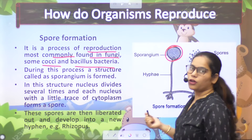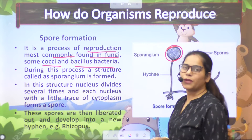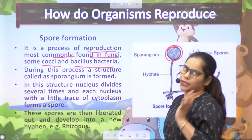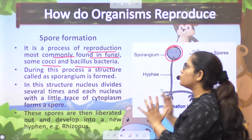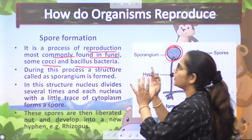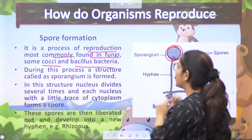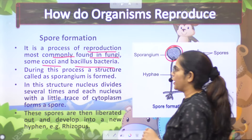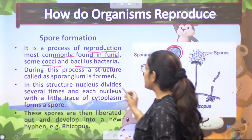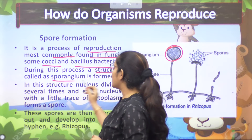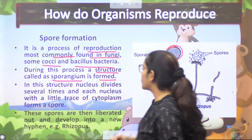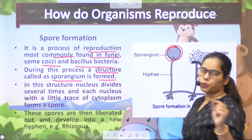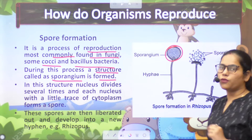Some cocci and bacillus bacteria also form spores. Bacteria has a category of bacillus. So in fungi and cocci bacteria, spore formation occurs. The structure called sporangium is formed. Here is the formation of sporangium — a small sporangium is formed.